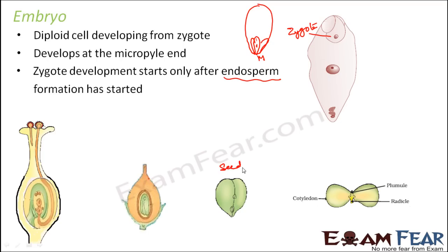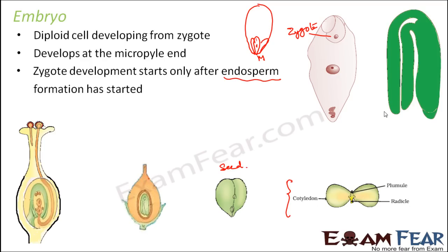Inside the seed you can see the embryo. The embryo consists of a small plumule which will later become the shoot system, a small radicle which will later become the root system, and the cotyledons (the seed leaves) which provide nutrition for the development of the plumule and radicle.